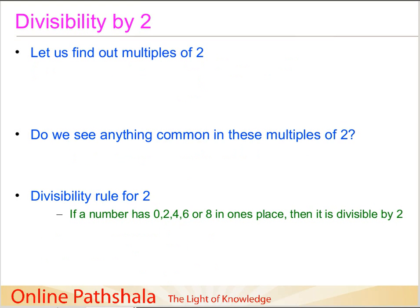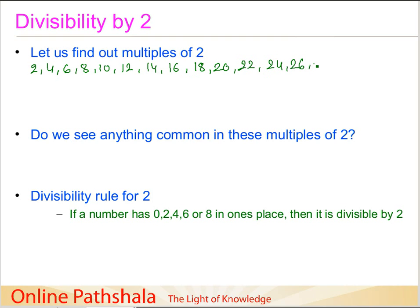Now let us move on to the next number. We will see if we can find a divisibility rule for whether a number is divisible by 2. Again, we follow our method and first find out the multiples of 2. So, starting from 2: 2, 4, 6, 8, 10, 12, 14, 16, 18, 20, 22, 24, 26, 28, 30, and it can go on.